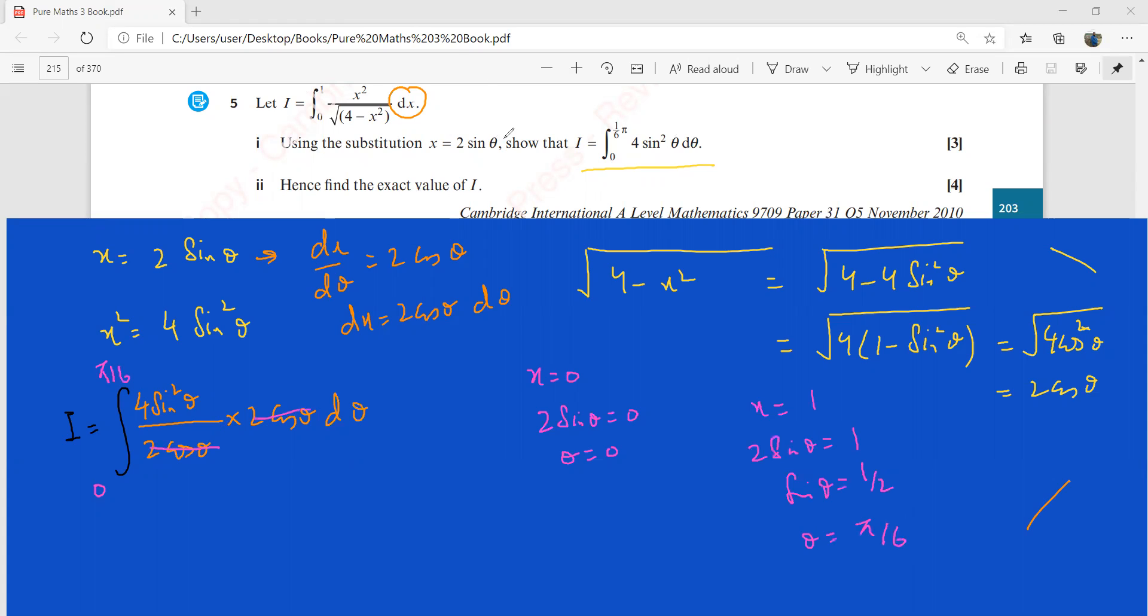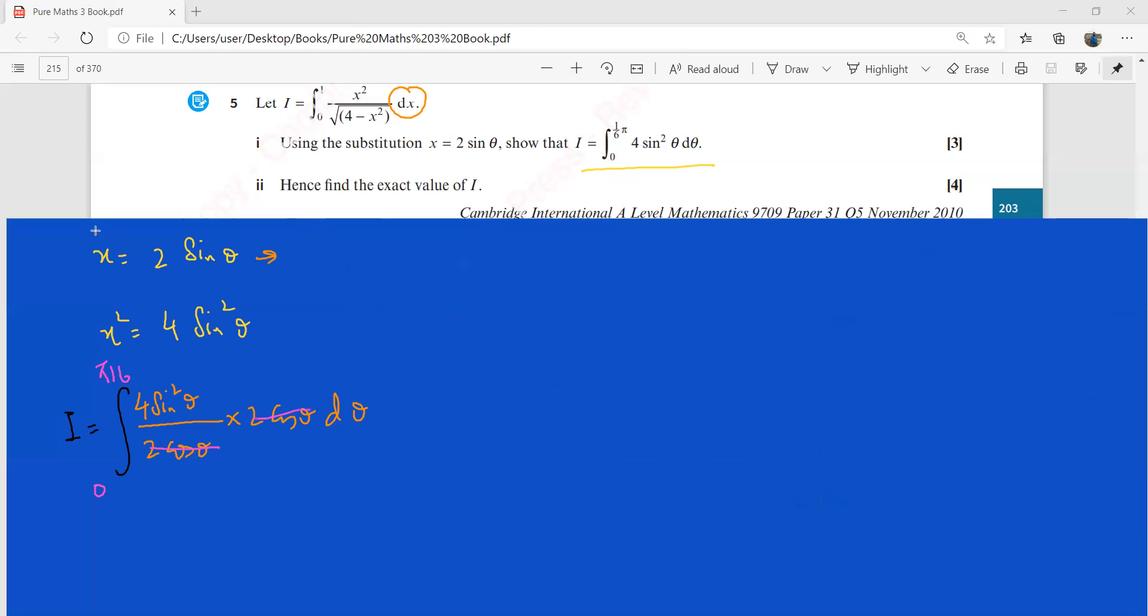And then we have to find the exact value of this I. So let me clear up the things here for that. Now we have this I. This is 0 to pi by 6, and this is 4 sin squared theta d theta. This is the question that we have, and we have to find its exact value here.